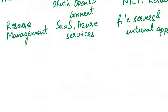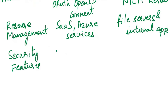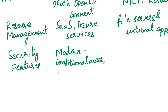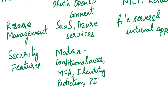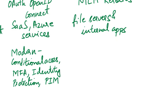The next aspect of comparison is security features. Azure AD offers modern security features like conditional access, multi-factor authentication (MFA), identity protection, and Privileged Identity Management (PIM). On-premises Active Directory provides security features tailored to traditional network environments, but may lack some advanced security capabilities of Azure AD.